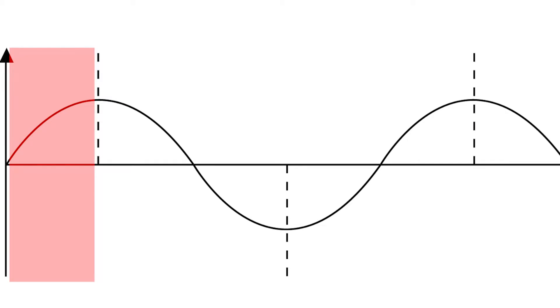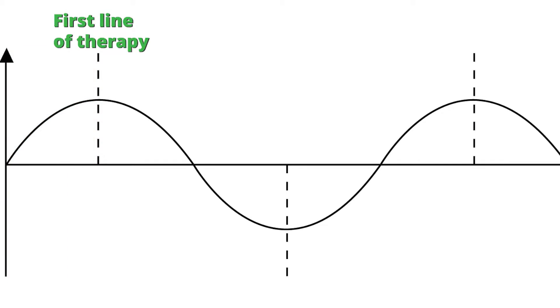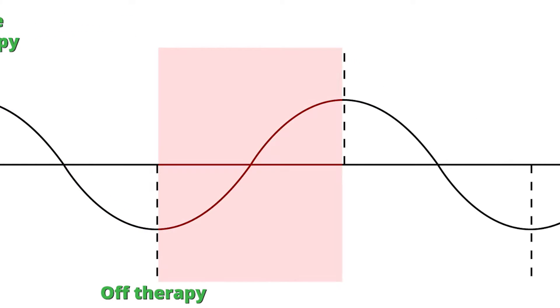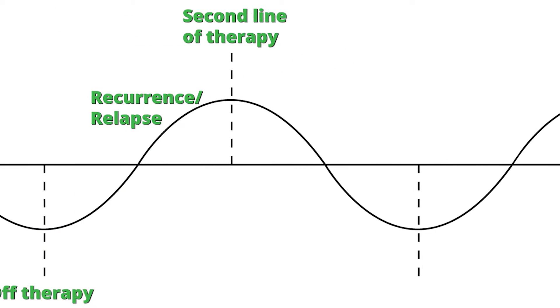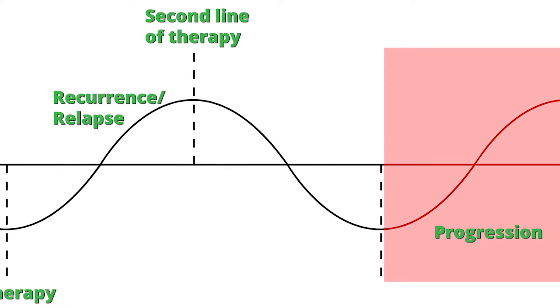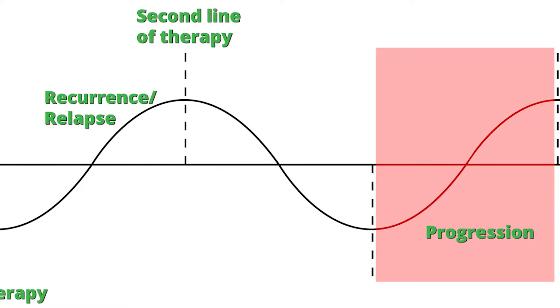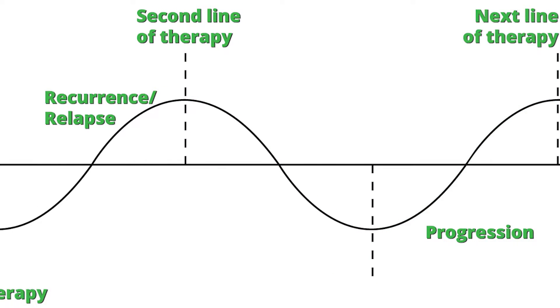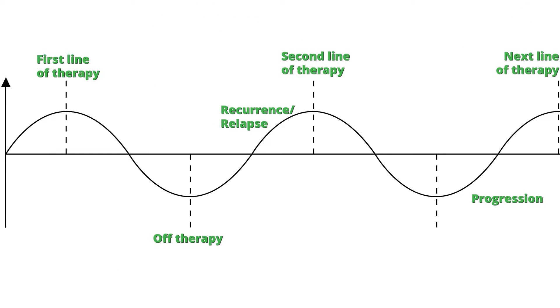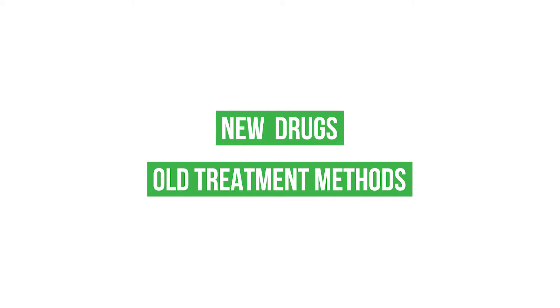Generally speaking, it used to be that patients would get initial therapy and then be off therapy, and when they would recur they would get second-line therapy. That would potentially be continued until progression, and then they would get the next line of therapy when that treatment was no longer working. This was generally in an era where we didn't have a lot of medications available.